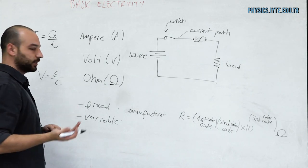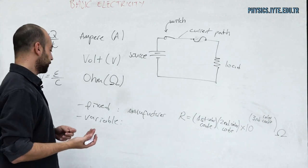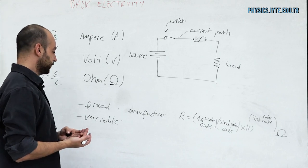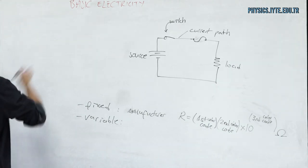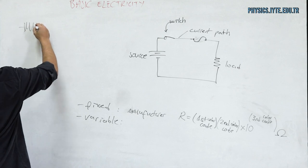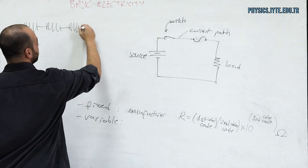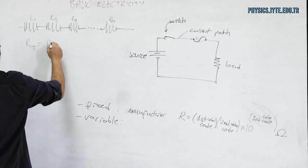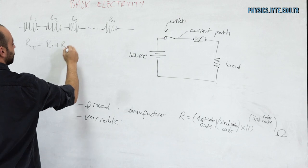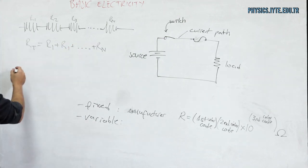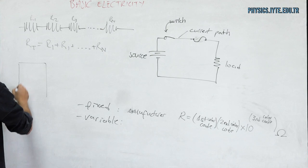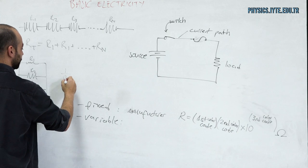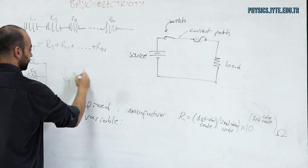For variable resistances, we can adjust their values by manual or automatic adjustment — for example, rheostats. If we want to connect two or more resistances in series, the total resistance is equal to the sum of all the resistors. If the connection is in parallel, the equation for total resistance follows the reciprocal formula.